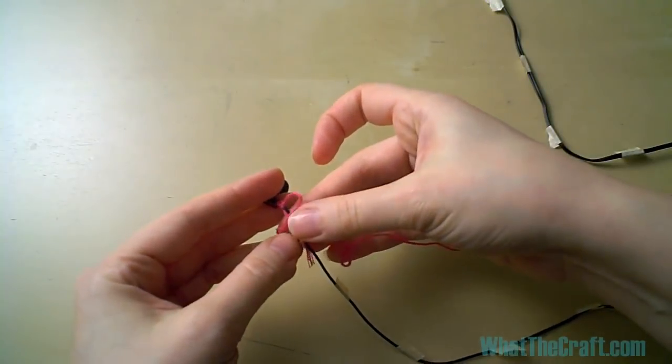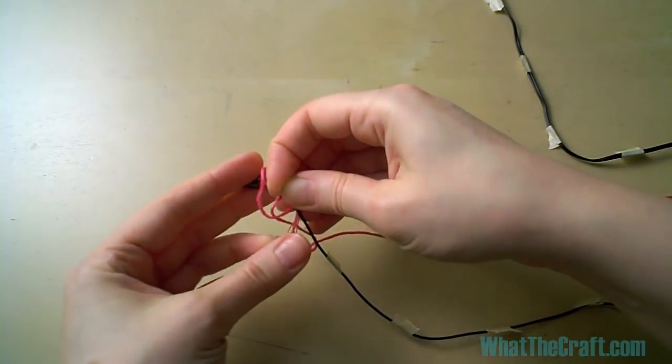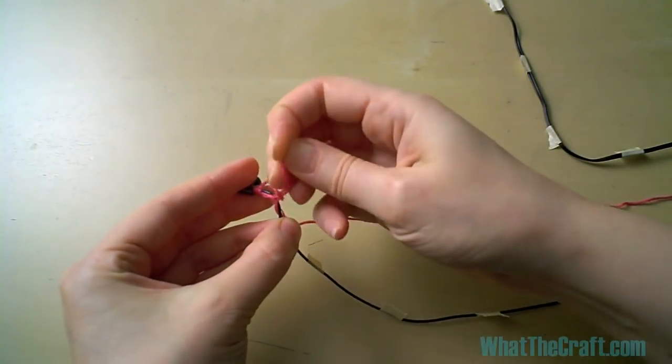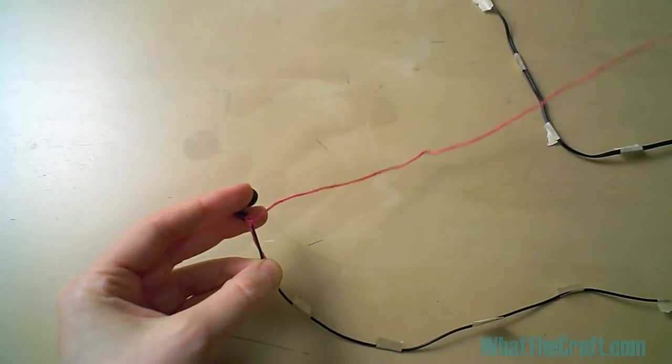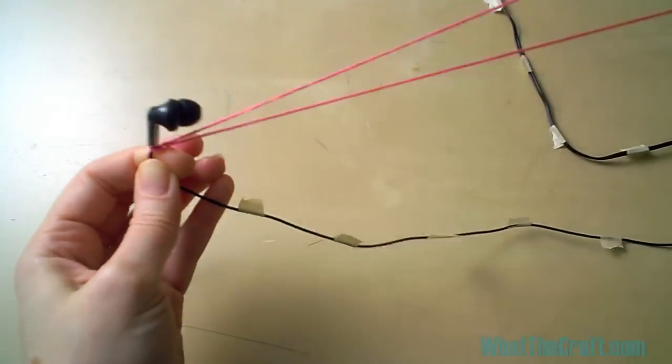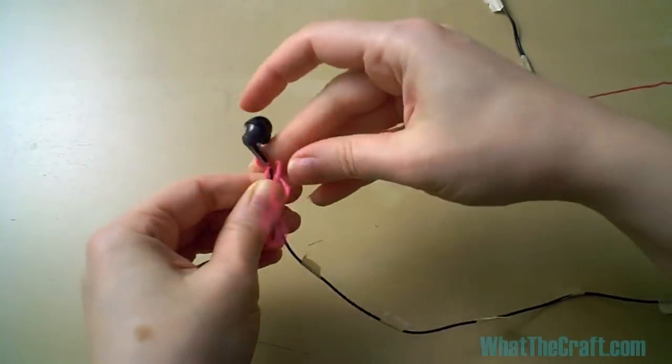If you're familiar at all with making friendship bracelets, you probably know this knot. It's called a spiral knot, and it's really just a plain old single knot that happens to form a spiral as it winds down the cord. So that's what we do: knot, knot, knot all the way down.